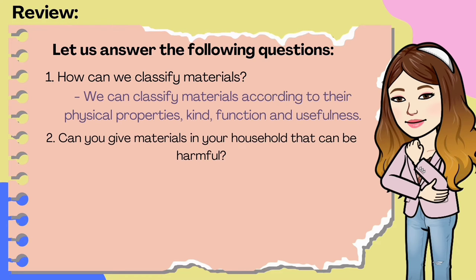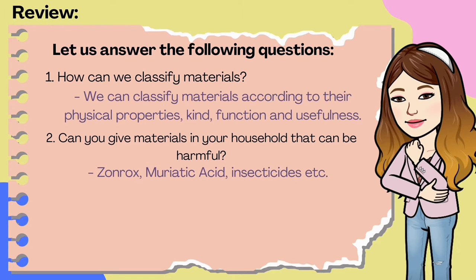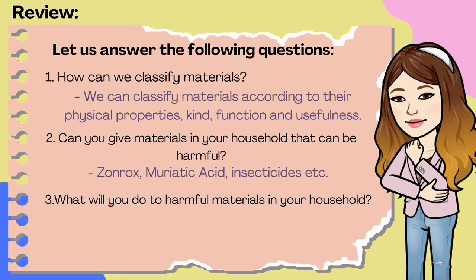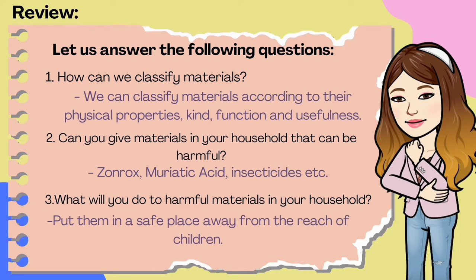Number 2: Can you give materials in your household that can be harmful? Some of them are sawn rocks, muriatic acid, insecticides, and etc. And the last one — what will you do to harmful materials in your household? Put them in a safe place away from the reach of children.